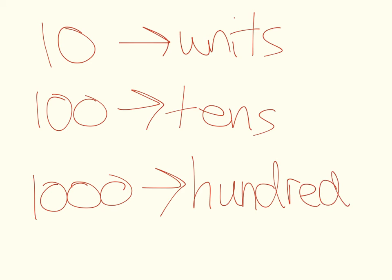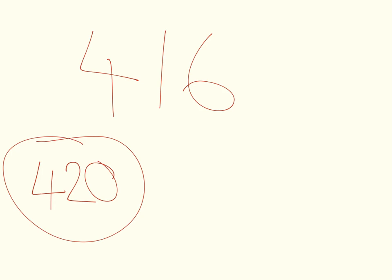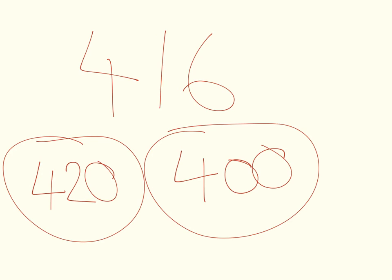Hopefully, this has made rounding a little bit easier for you. Why don't you try some examples at home? All you need is a dice, and you can roll maybe three times to give yourself a three-digit number. So, for example, four, one, six — and I can try rounding this number to the nearest ten, which is going to give me four hundred and twenty. To the nearest one hundred is going to be four hundred, because it's the nearest multiple of one hundred.